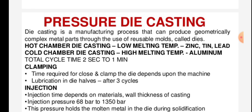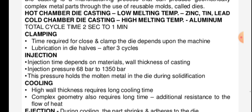Pressure die casting. Die casting is a manufacturing process that can produce geometrically complex metal parts through the use of reusable moulds called dies. There are two types: hot chamber die casting, used for low melting temperature metals such as zinc and tin, and cold chamber die casting, used for high melting temperature metals like aluminium. Total cycle time is 2 seconds to 2 minutes.